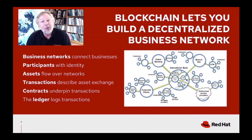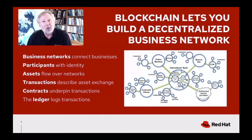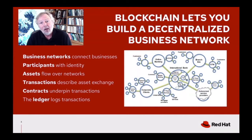A blockchain lets you build a decentralized business network. Many elements are very familiar: you have a network connecting different businesses partnering for purchasing goods, delivering goods, paying for things, and so forth. All participants have an identity — in business networks, typically a known identity. Assets of various types flow over those networks: digital currency, fiat currency, digital representations of goods, and information about network participants.